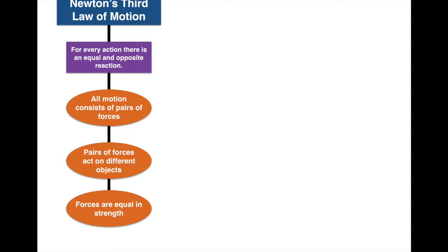Newton's third law of motion: for every action, there is an equal and opposite reaction. There are three things Newton's third law involves: all motion consists of pairs of forces — there's always two of them — they act on different objects, and the forces are equal in strength. They're equal in strength, opposite in direction, and as a result, they act on different objects and cause the object to go in motion.